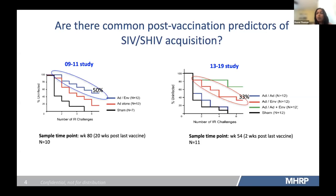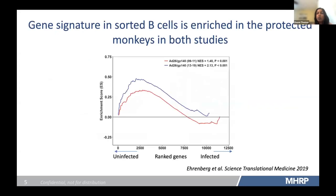We wanted to make sure these signatures were present in both studies. We found one such signature enriched in the protected monkeys in both studies — both the 0911 in red and 1319 in blue. We found the signature in sorted B cells, and went on to show that the same gene signature was enriched in the uninfected monkeys in an independent arm of the 1319 study, which showed the most protection. All these findings are from non-human primates.